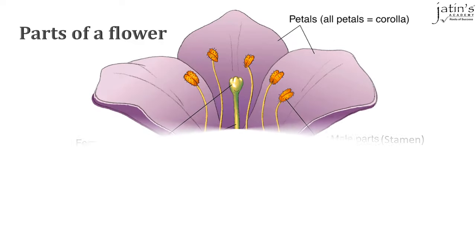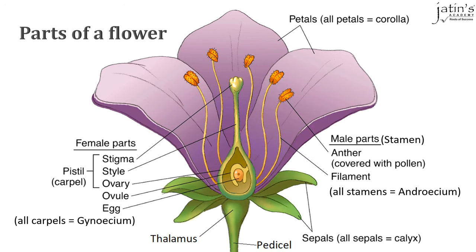Let's see the typical parts of a flower. We can see the green sepals underneath the flower — they form the calyx. The colorful petals together form the corolla. The male part, the stamen, is divided into anther and filament, which together form the androecium. The female part contains stigma, style, and ovary which contains ovule and egg. Together this is called the pistil or carpel, forming the gynoecium.